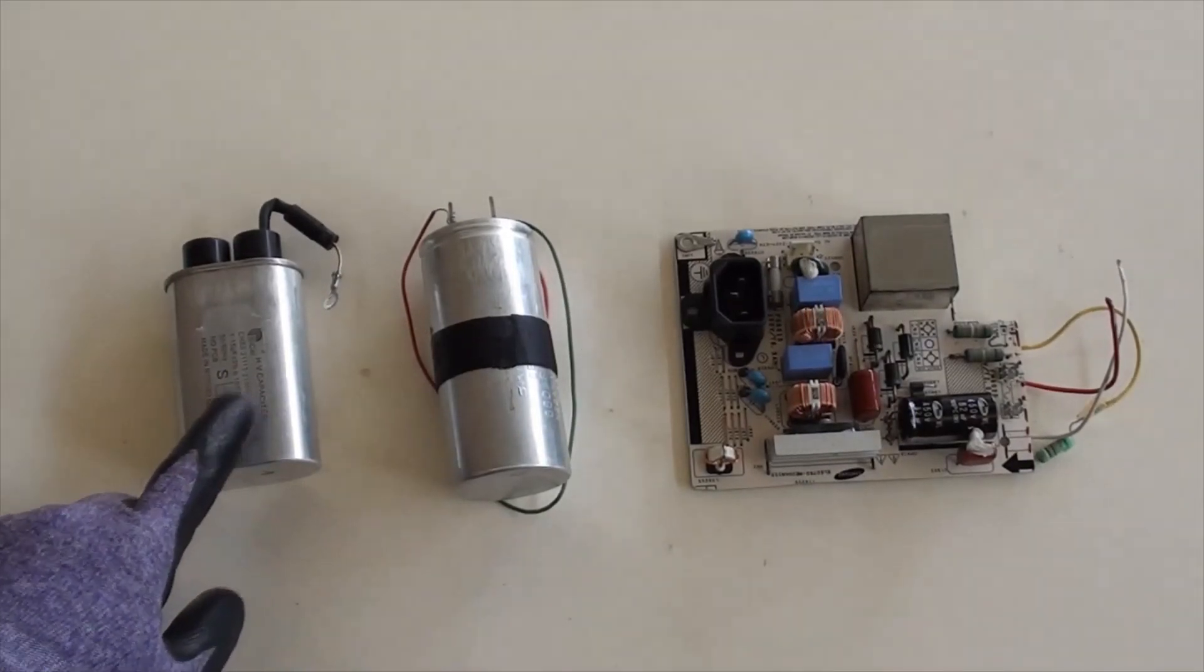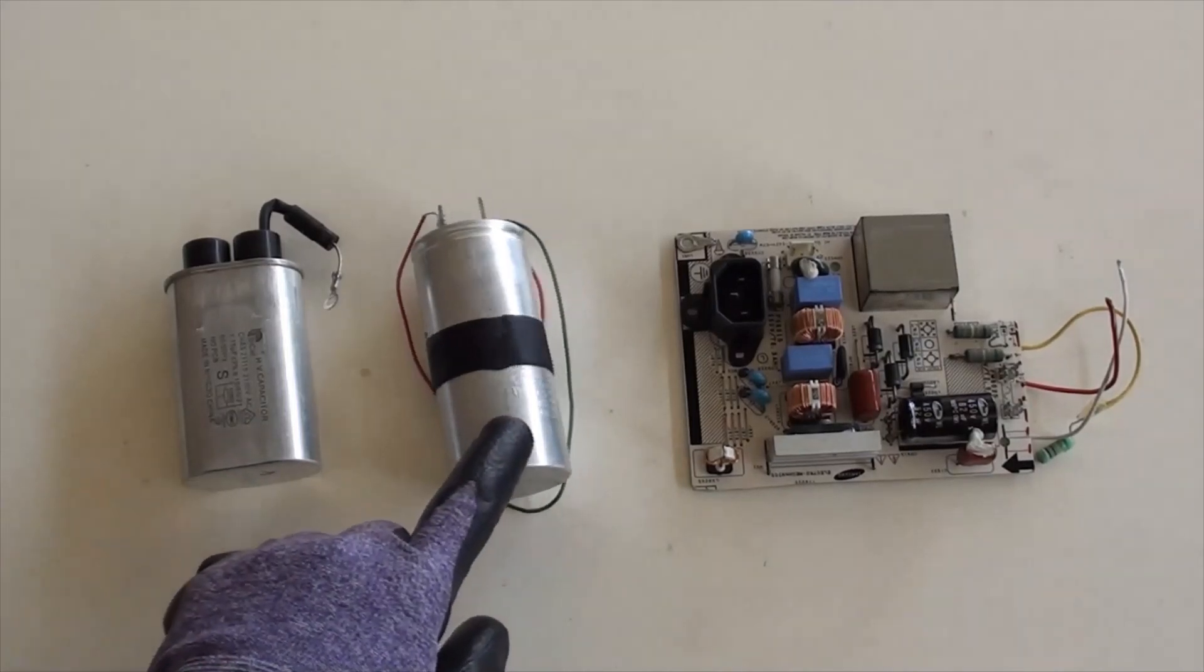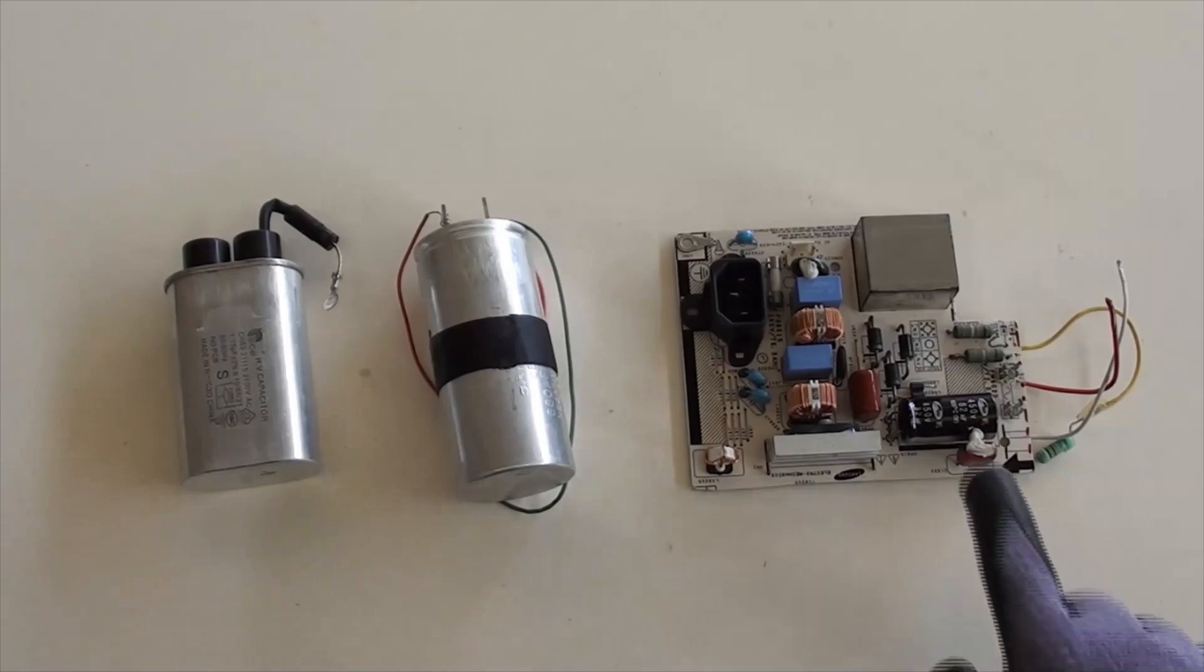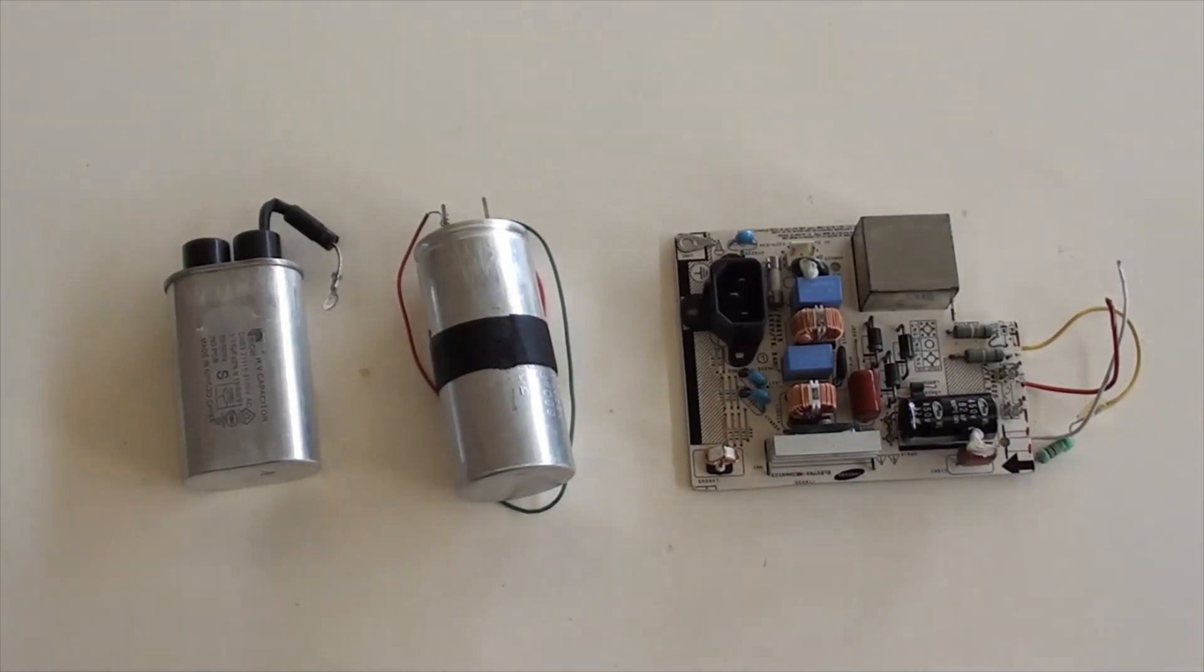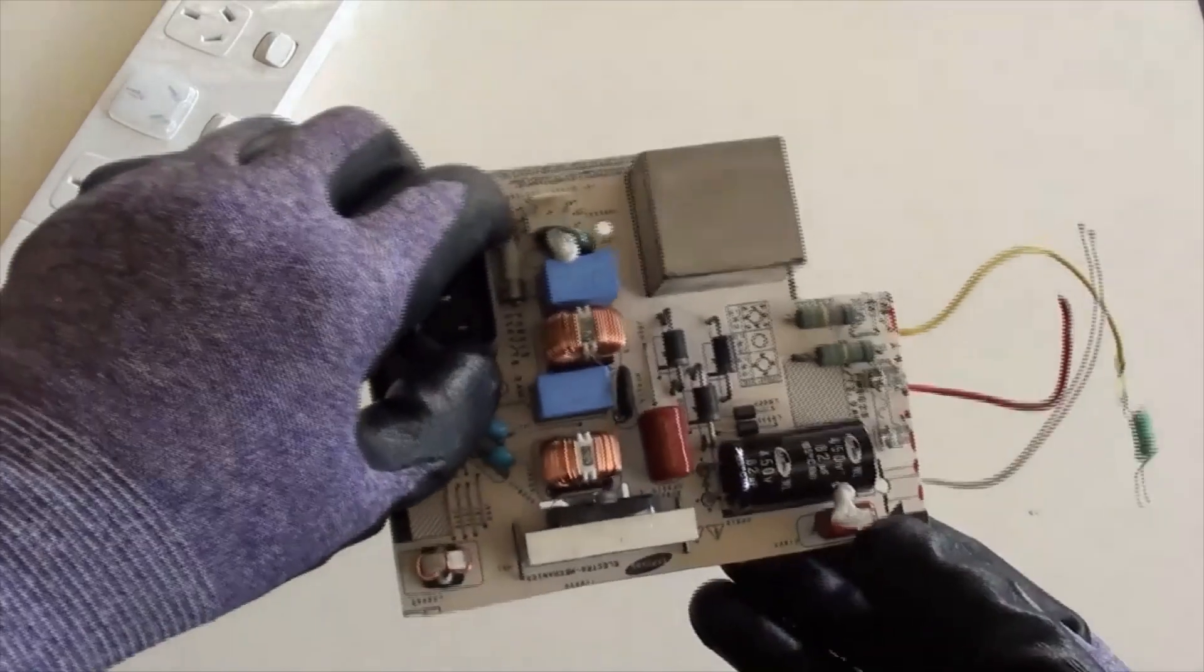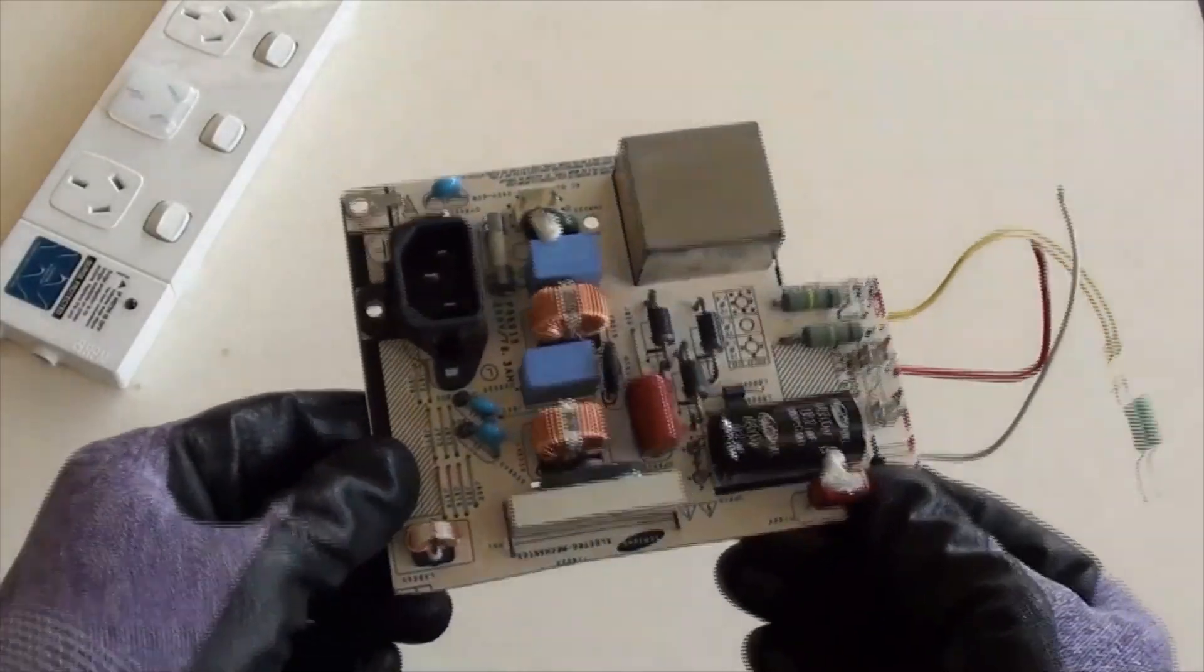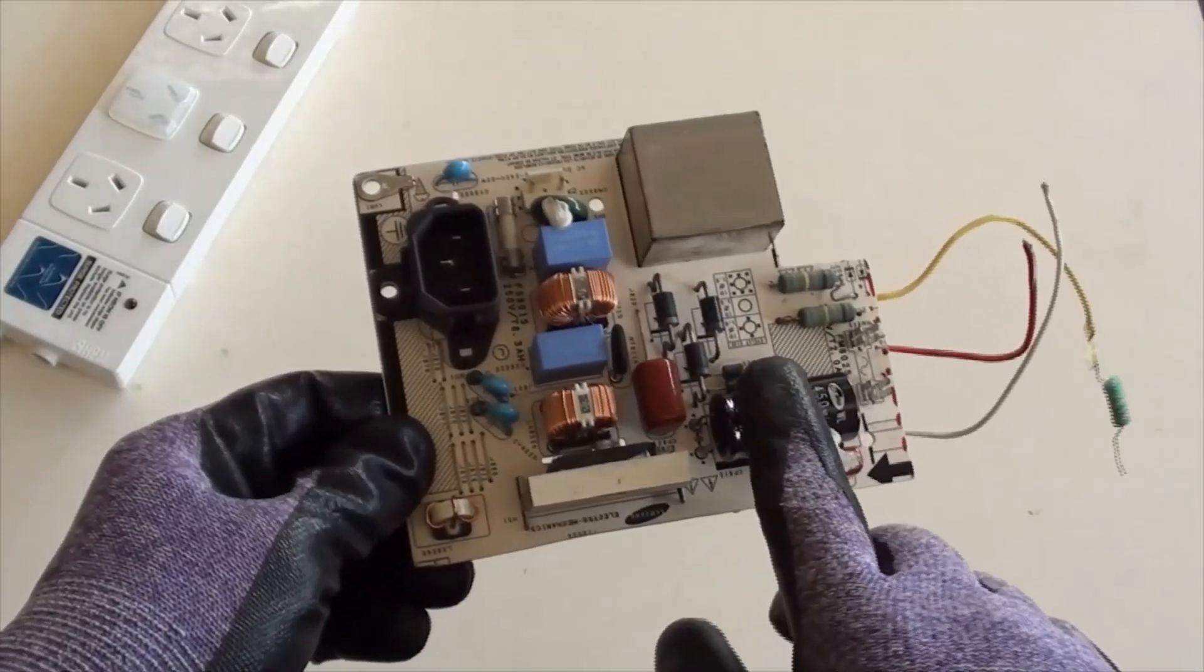This is a high voltage capacitor used in microwave ovens. That is an AC 220 to 240 volt capacitor. And this one is a DC 450 volt capacitor used in circuit boards. For the part of the circuit board here, taking this capacitor as an example.